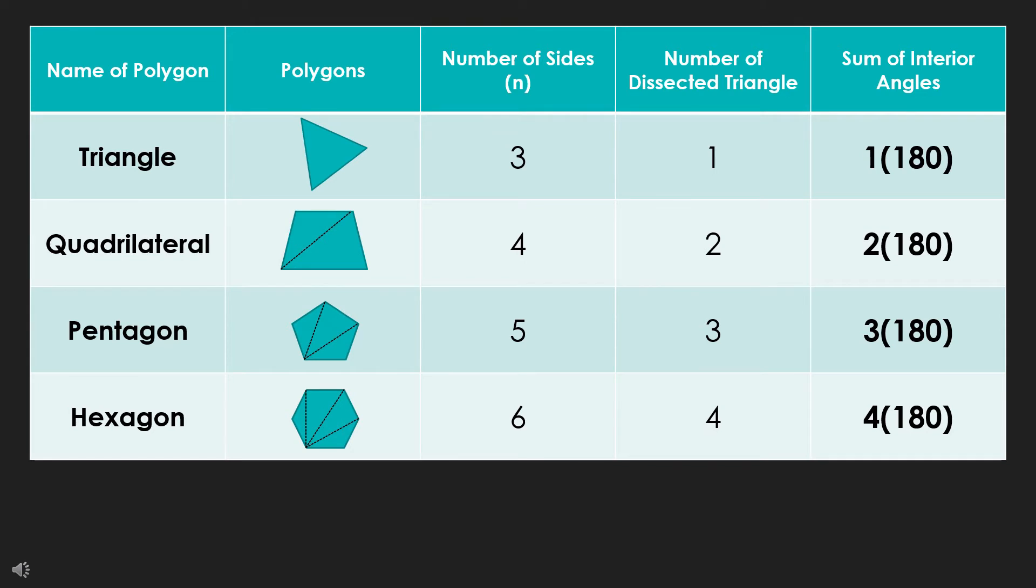Let's explore this. In this table, we have the different kinds of convex polygons. Triangle has three sides, and it has one triangle by itself. And on previous learnings, we know already that the interior angles of any triangle is always 180 degrees. Now, considering the quadrilateral, which has four sides, we can actually dissect two triangles from it. Thus, we can say that the sum of the interior angles per quadrilateral will be 2 times 180 because we have two triangles.